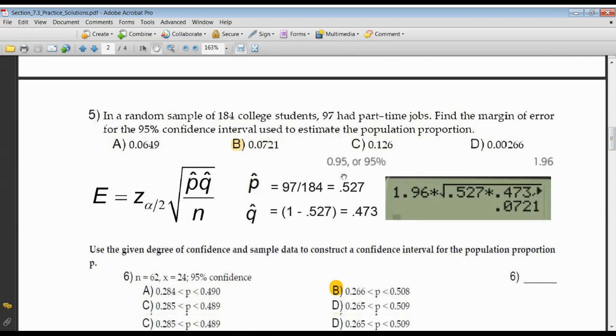I guess I give you one more. Number 5 goes back to like numbers 1 and 2, where you don't know what P hat is. So it's like finding a proportion. Finding a proportion is like finding a probability. Favorable over total. 97 people out of 184 college students had a part-time job. The proportion is this decimal, 97 over 184 equals 0.527. Then Q is equal to 1 minus that, but notice, correct to three places. If I do this to three places, I'm going to ensure myself I'm going to get an answer that's spot on.